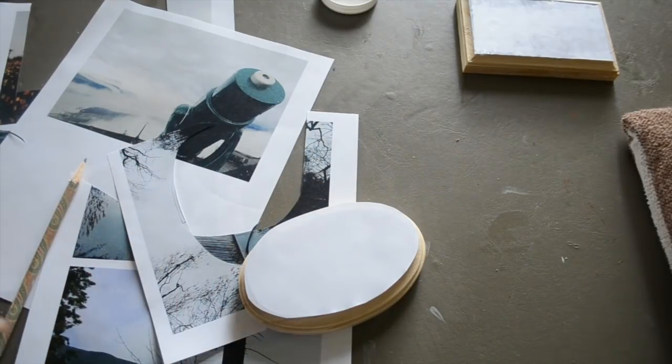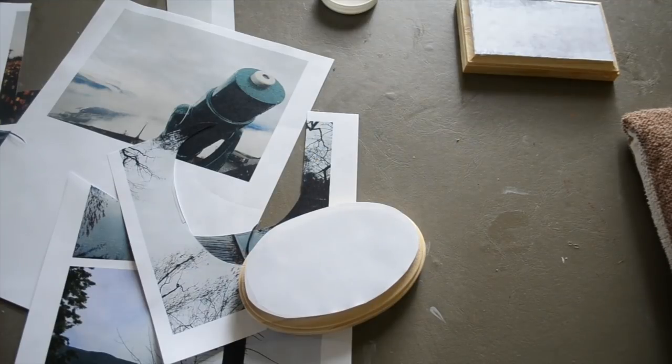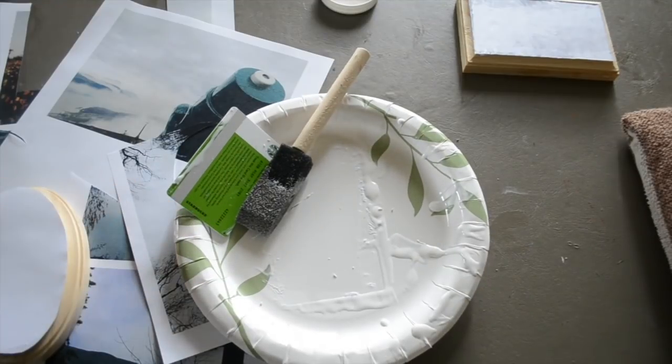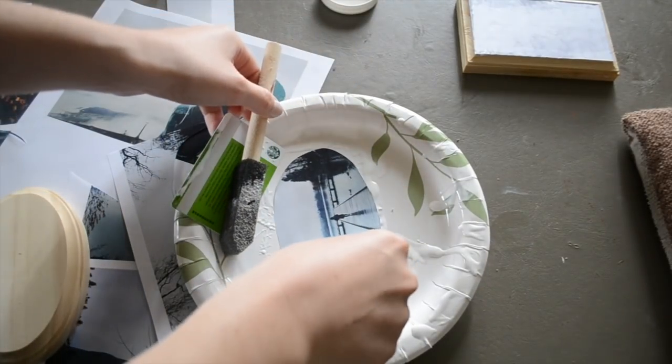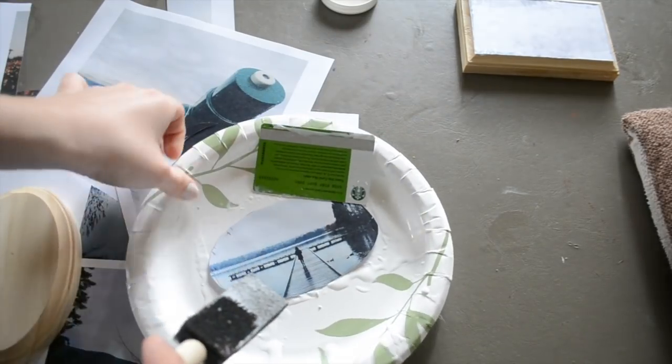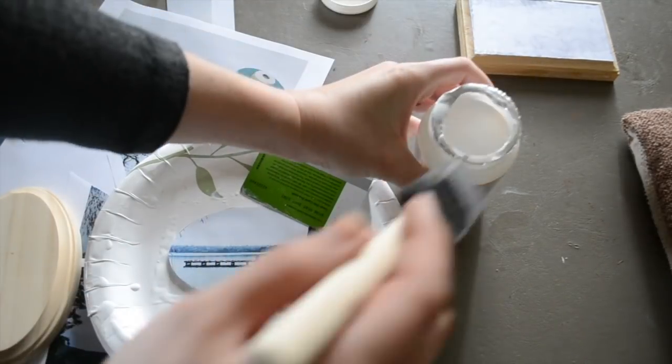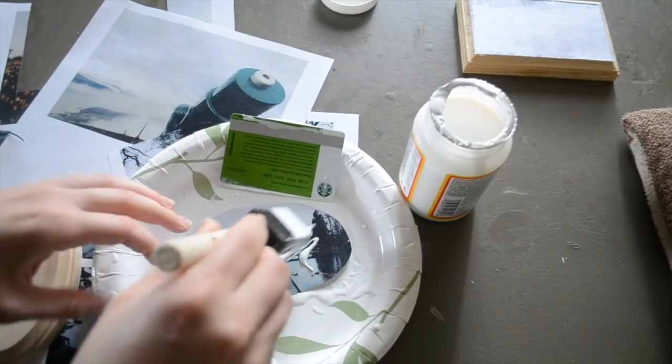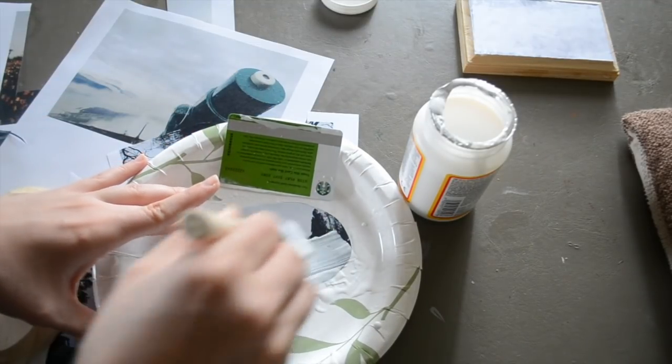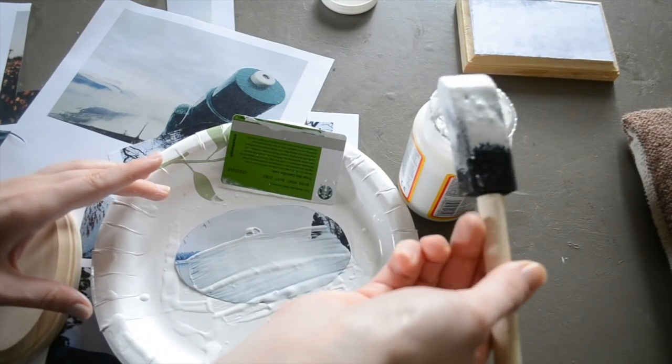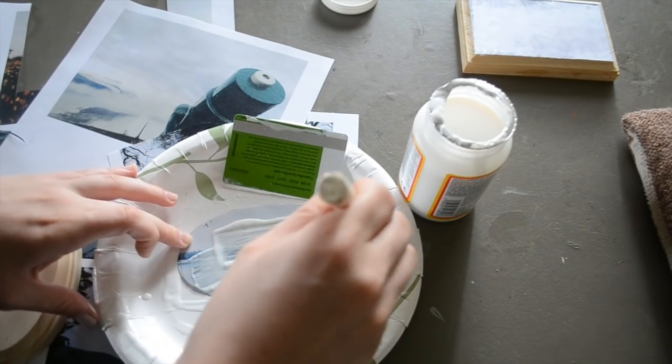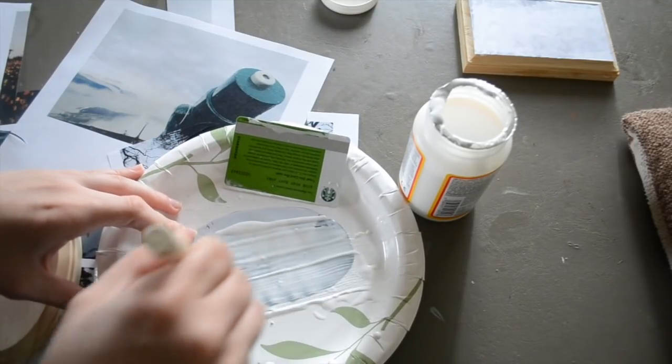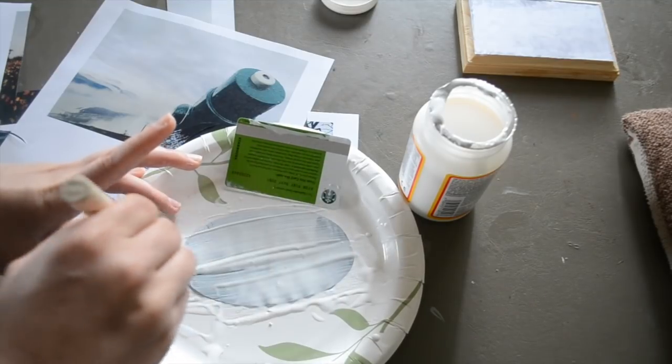Now the next step is applying Mod Podge to your image. I'm going to lay the image on this paper plate, and you want to apply your layer of Mod Podge directly to the surface. You need a lot of Mod Podge. You want the image to be completely covered, so a nice thick white coat. This part's a little scary because you're just covering your image with this white glue, but this is what is going to transfer the color onto your wood.